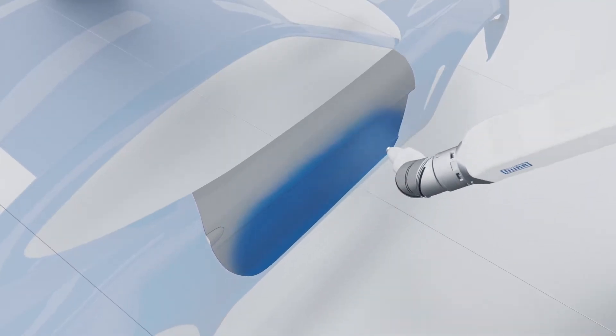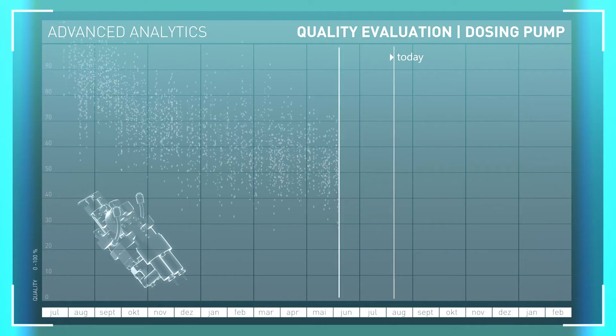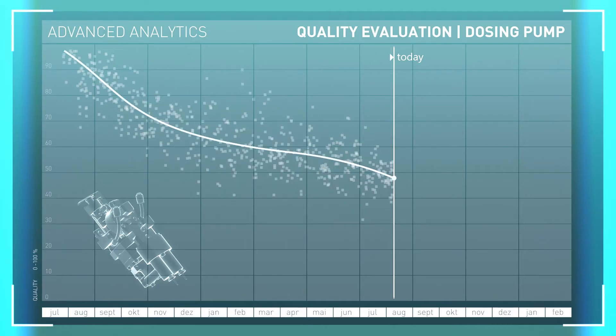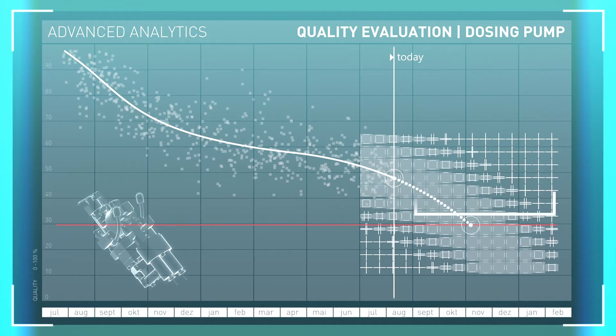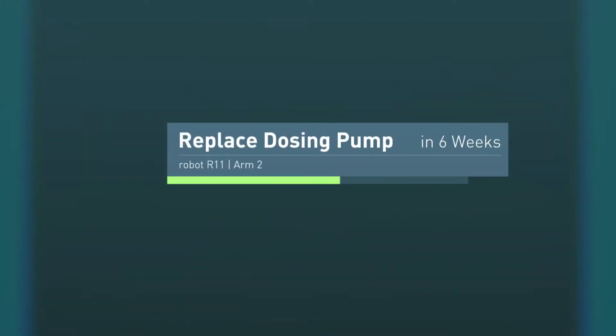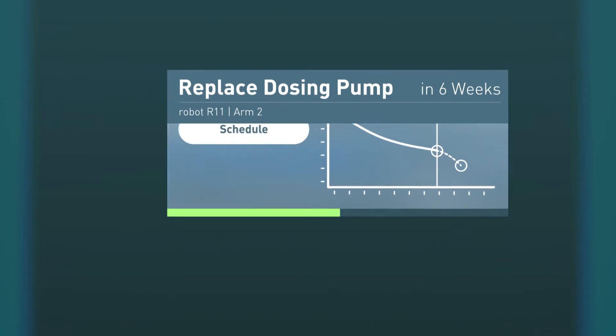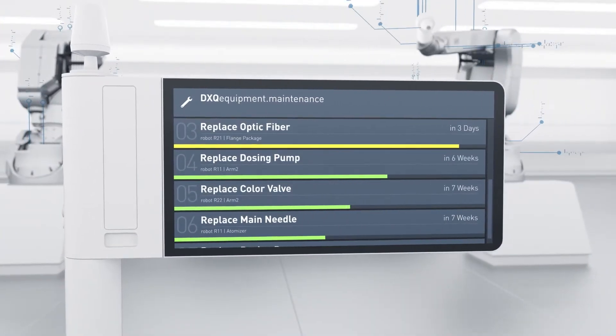Our machine learning algorithms continue to learn based on historical data and consider user feedback. They learn from the production how the system behaves and predict the status of the components, like a dosing pump failure predicted to occur in six weeks' time.